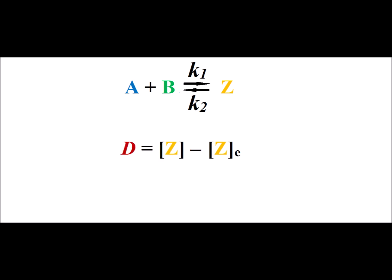For this reaction, the difference between the equilibrium concentration of z, z sub e, and its current concentration is D, this big D.